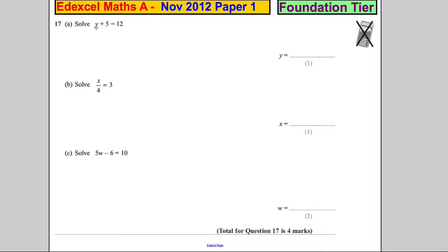Question 17: Solve y plus 5 equals 12. Using the balance method - do the same things to both sides to get y by itself. If I subtract 5 off both sides, I would have y on the left hand side and 7 on the right hand side. And 7 plus 5 is 12, that's the right answer.